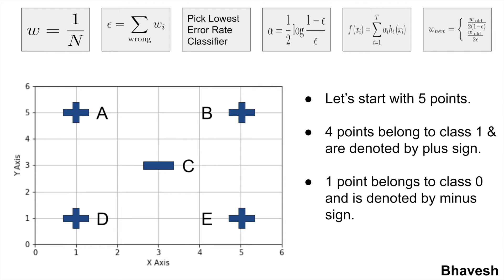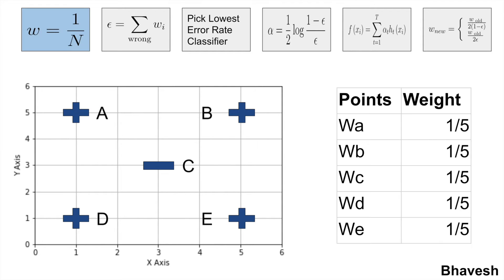If this idea is clear, let's proceed to an actual example. In the previous slide I showed 6 building blocks of AdaBoost — whichever step we're at, I will highlight that block so you have complete clarity. The example is fairly simple: I have 5 points with 2 features x1 and x2, corresponding to the x and y axes, drawn as a scatter plot. Points are at (1,1), (1,5), (3,3), (5,1), and (5,5). Four points belong to class 1 (plus sign) and one point — (3,3) — belongs to class 0 (minus sign). We first initialize all training point weights wa, wb, wc, wd, and we to 1/n, where n=5, so each point gets a weight of 1/5 or 0.2.